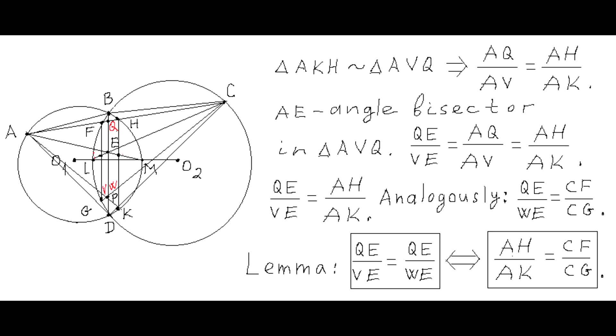Triangles AKH and AVQ are similar since segments QV and KH are parallel. Analogously, triangles CGF and CWQ are also similar.